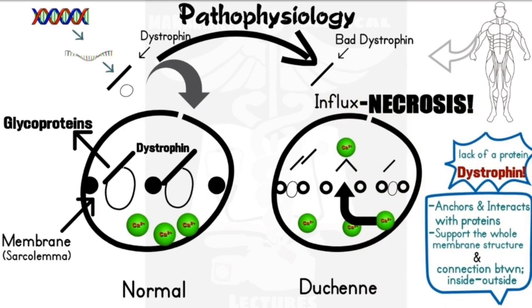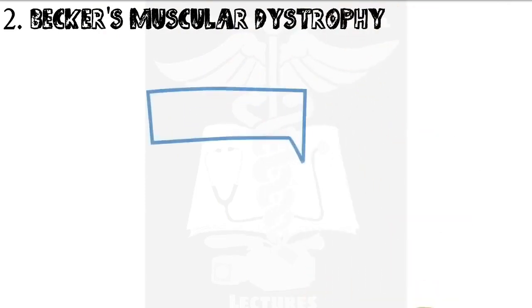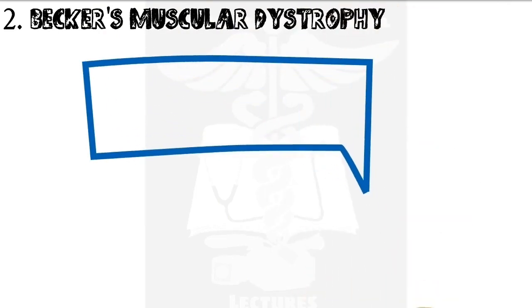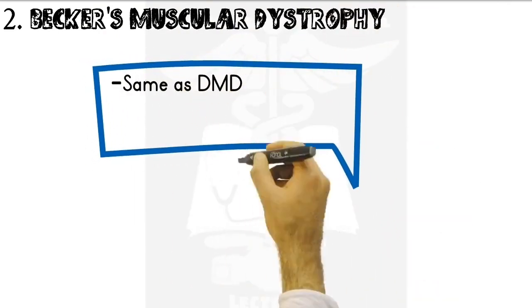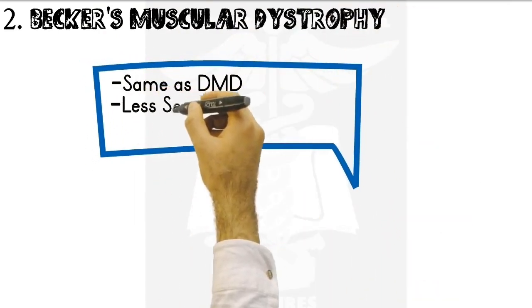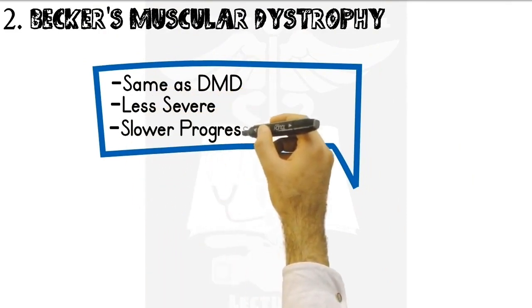We just looked at Duchenne muscular dystrophy. Becker's muscular dystrophy is the same as Duchenne muscular dystrophy, but it is less severe and has a slower progression.